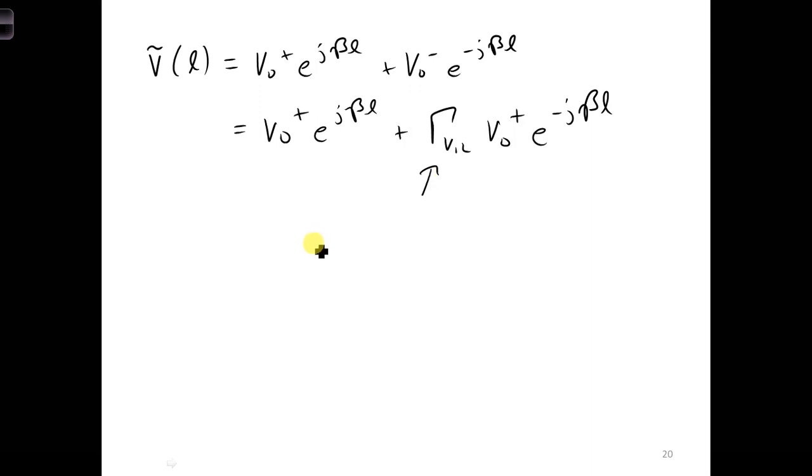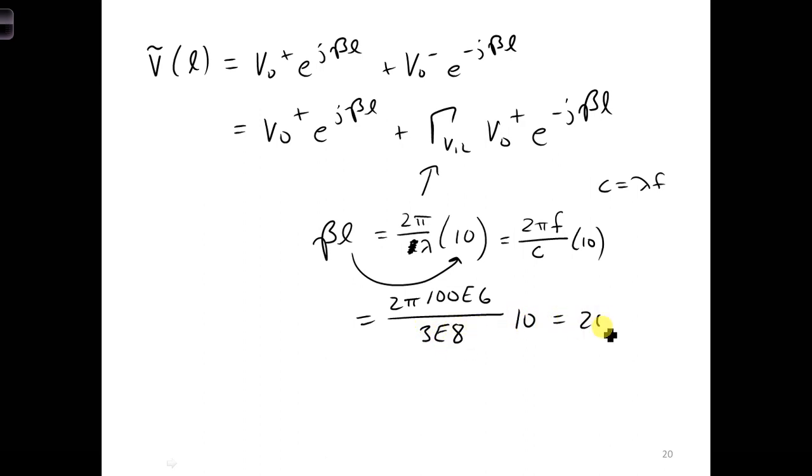We can also evaluate E to the J beta L and E to the minus J beta L. We need beta L, which is 2 pi over lambda times 10. L is equal to 10. For lambda, this is 2 pi over lambda for beta. And L is equal to 10. For 2 pi for lambda, I can put in C is equal to lambda F. I'm going to put in C and F here instead of lambda because we know the frequency and we know the speed of light. It's an air-filled line. 2 pi, the frequency is 100 megahertz, over C, which is 3E8. This will all equal 20.9.